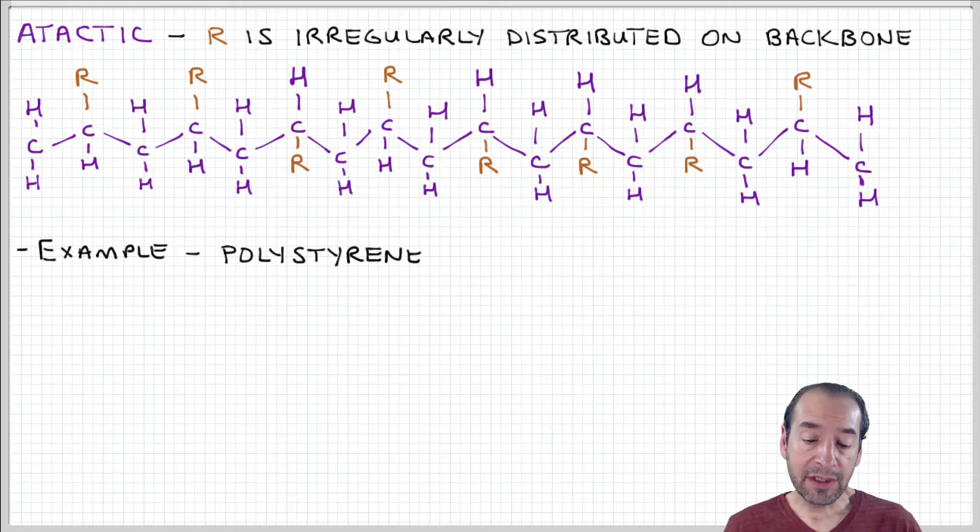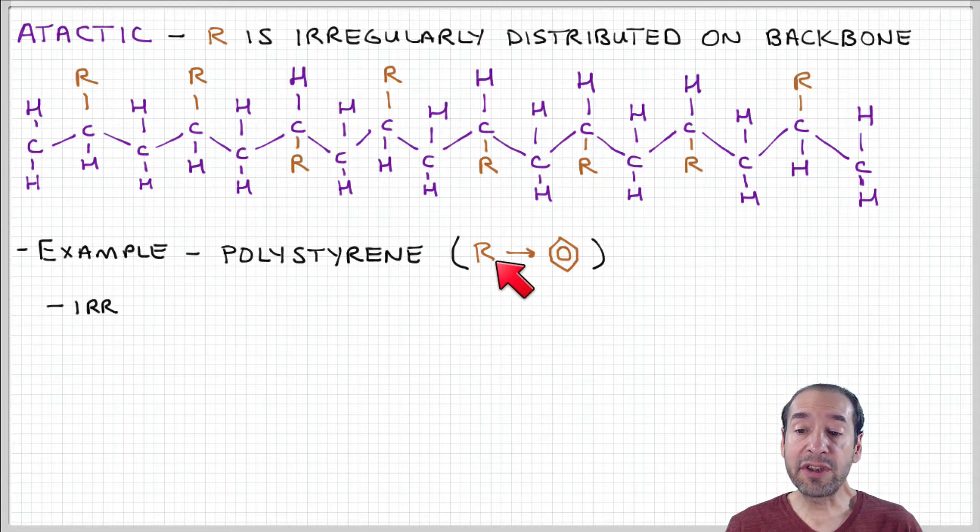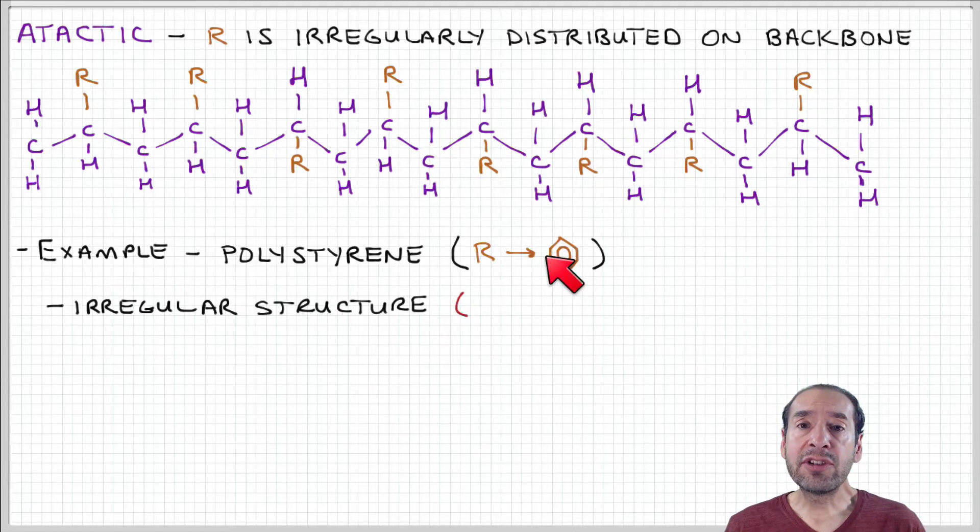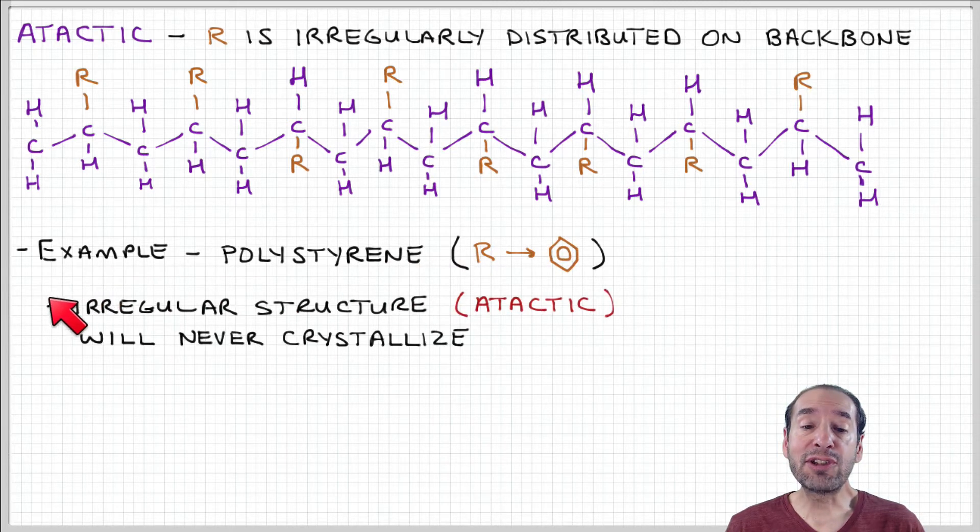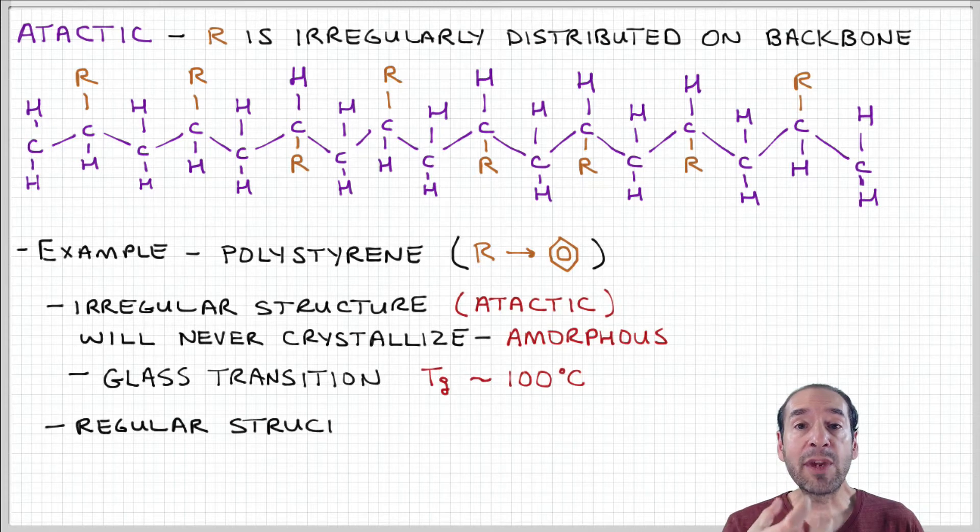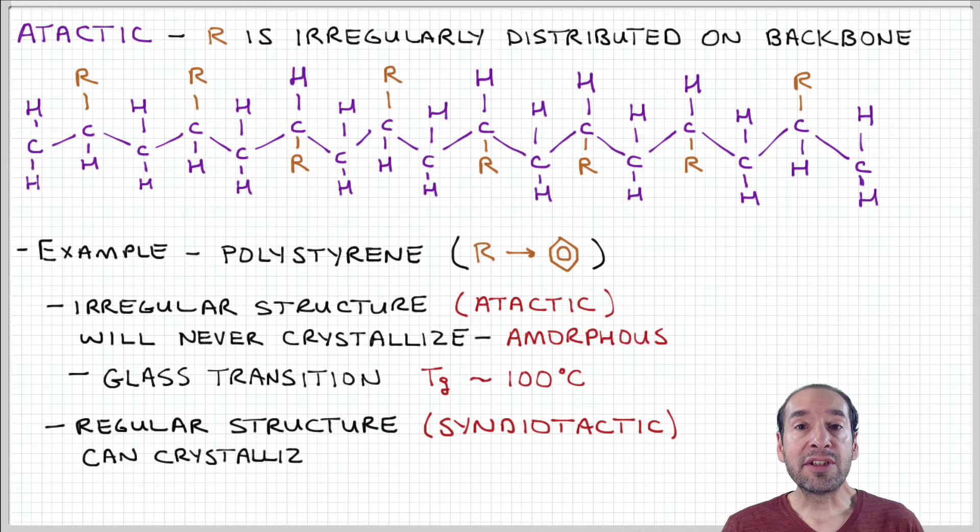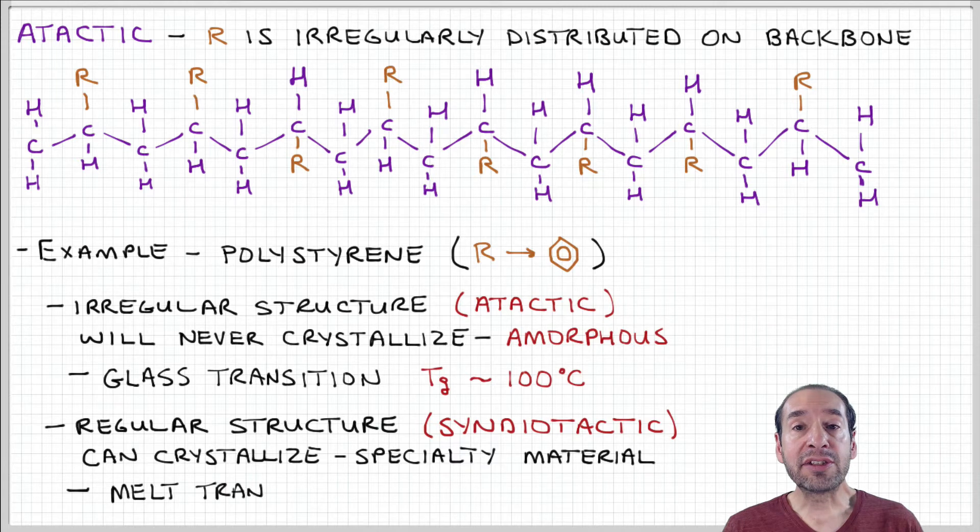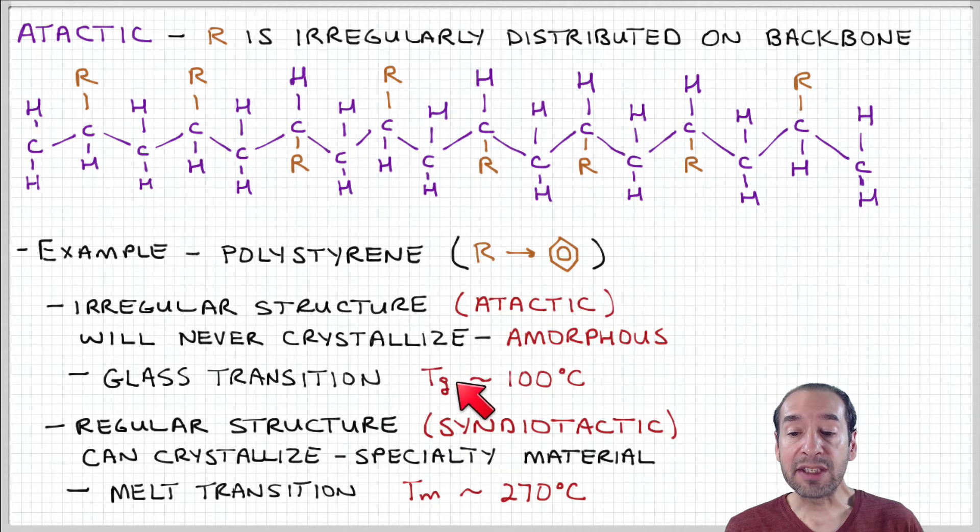So polystyrene, for example, we can consider the case where the side group is a carbon ring. And we talked about the case already where we have an atactic arrangement. So even though I didn't tell you that, we said that the presence of this bulky side group on the polymer chain prevents it from being arranged in a dense packing that would be needed to have a crystalline arrangement. So in general, polystyrene is an amorphous material. It doesn't show crystallinity. And it has a glass transition of around 100 degrees C. That means a transition where it begins to soften and flow.